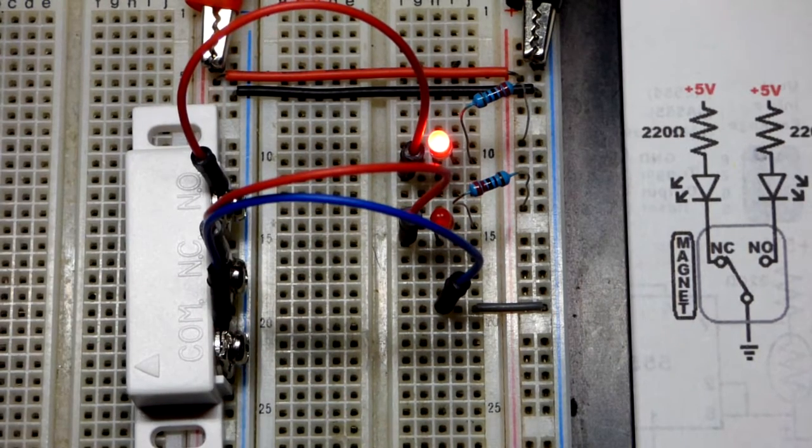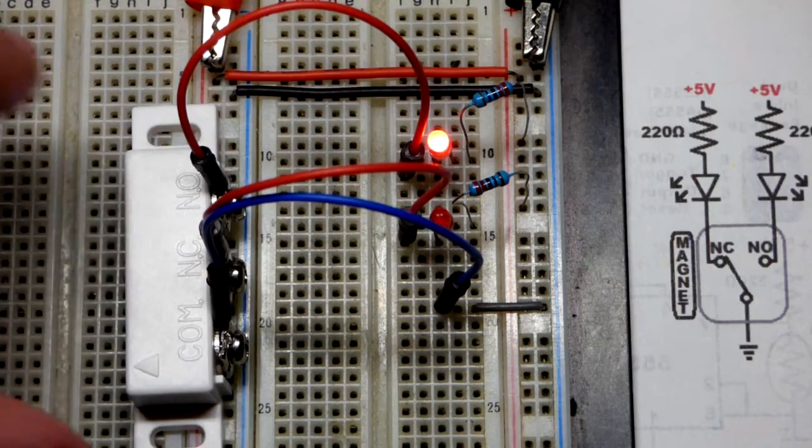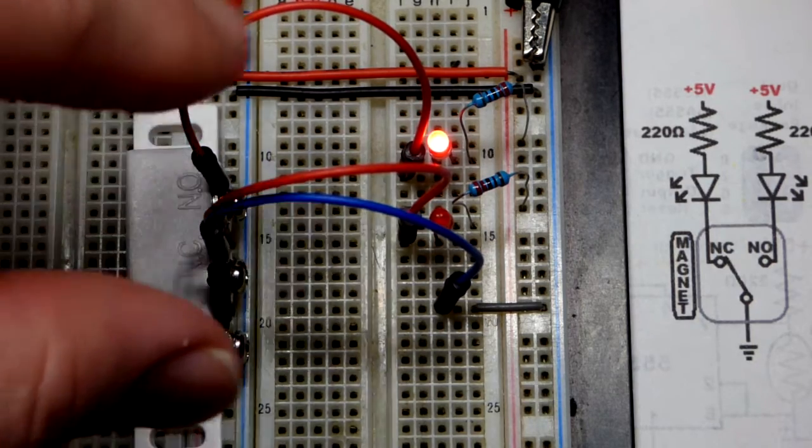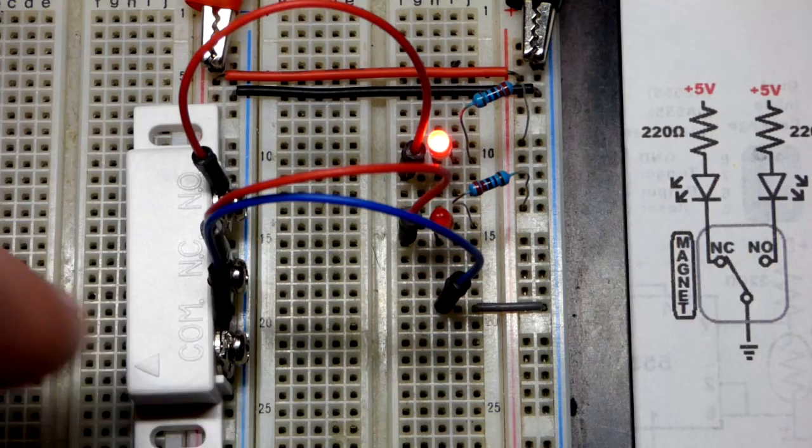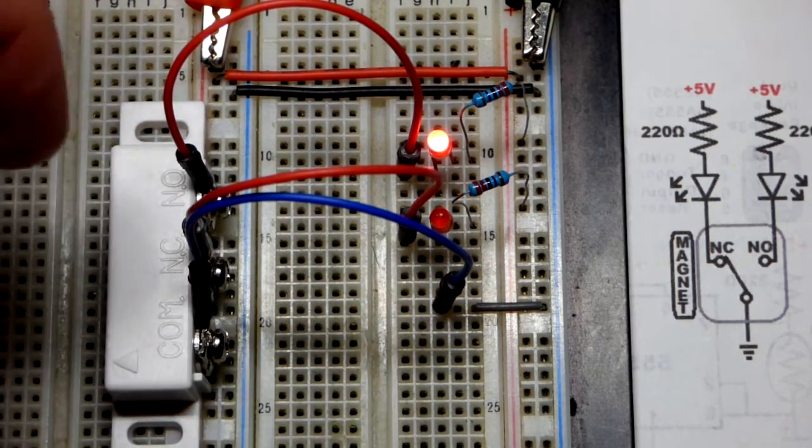I removed the magnet and now we switched it. So this is not the normal position. But the magnet is gone and now that's closed. Normally it is open when the magnet's next to it. And the normally closed is now open. That LED is off.